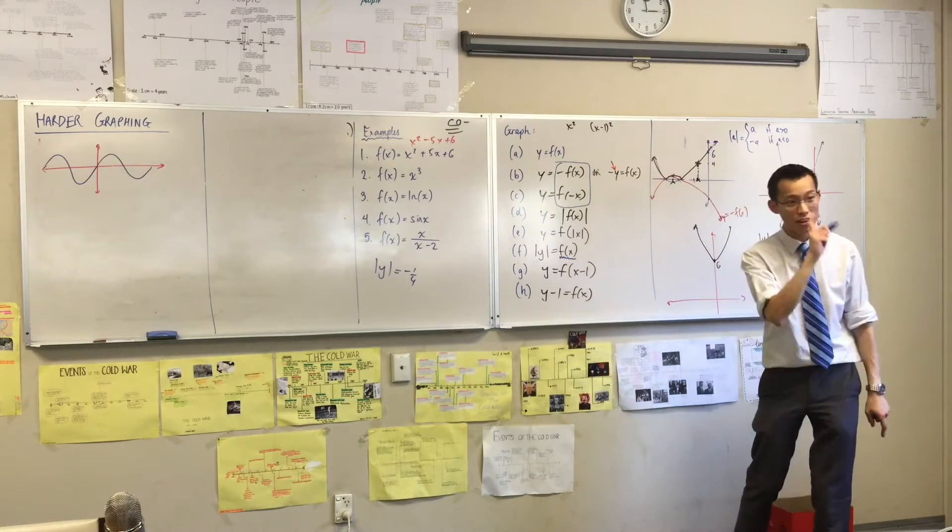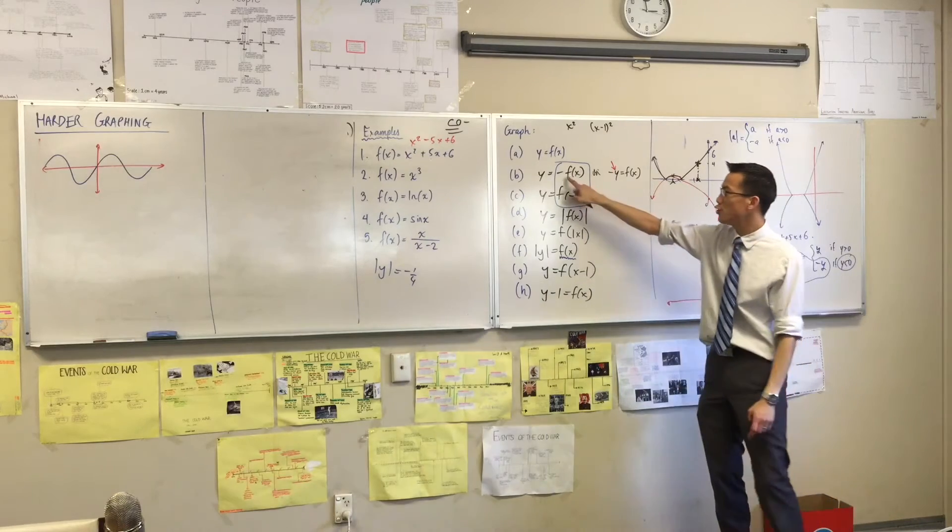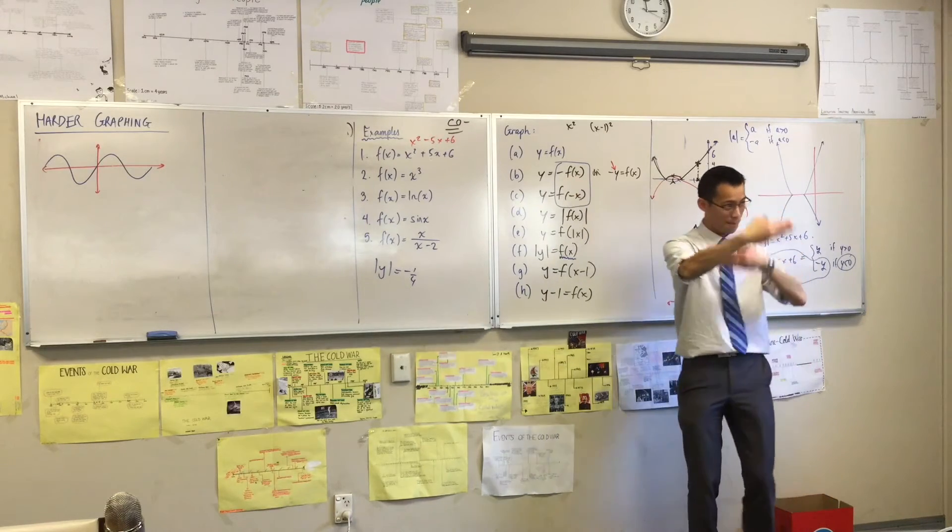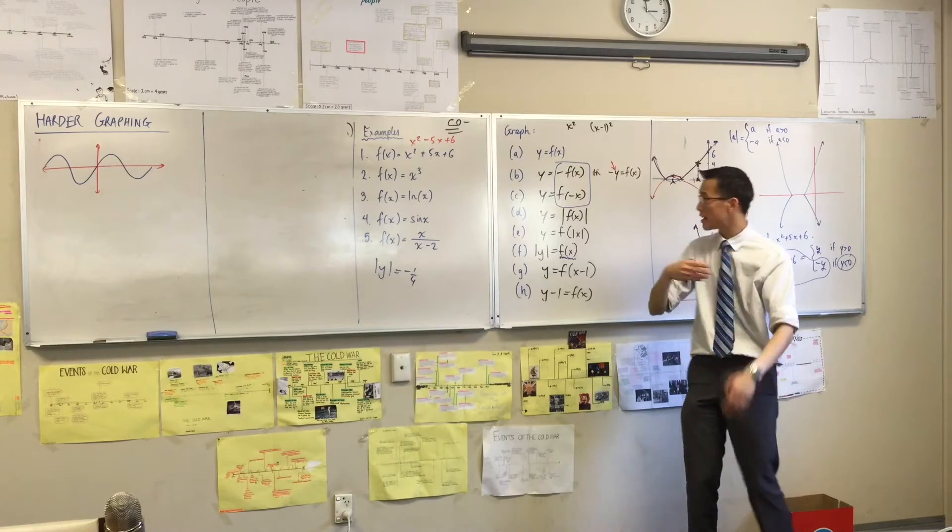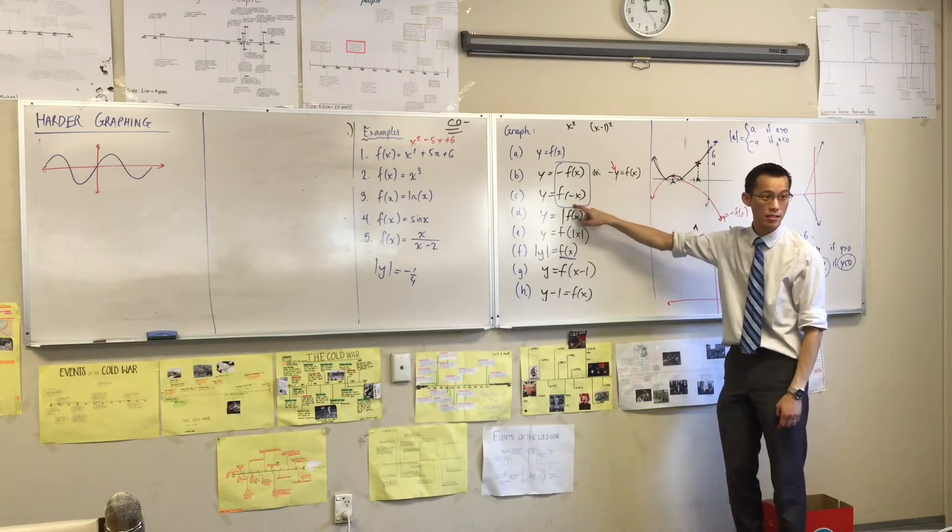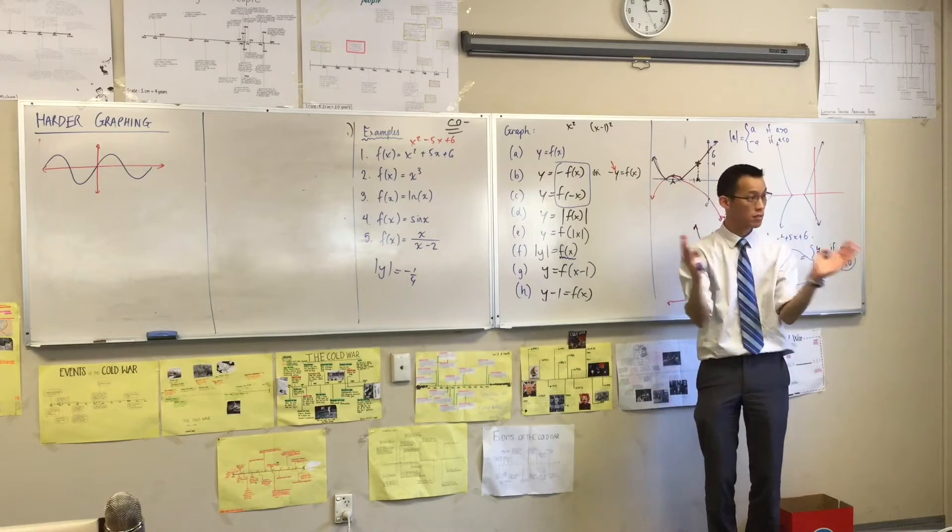So in fact, any odd function, what does that mean geometrically? If you flip an odd function upside down, that's the same as taking the odd function and flipping it left to right. Does that make sense?